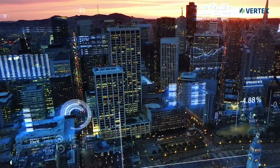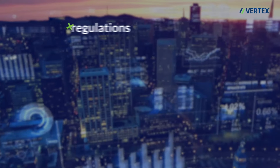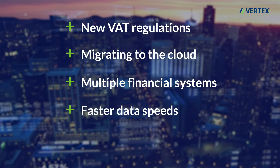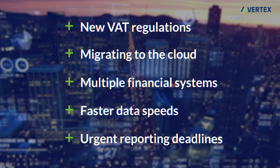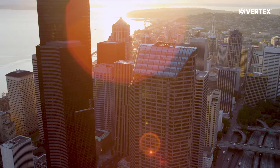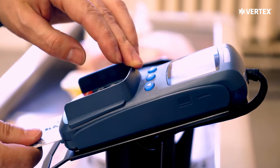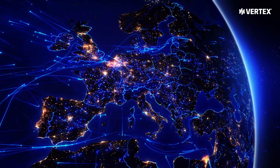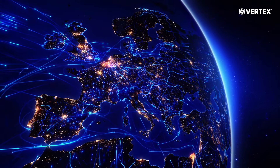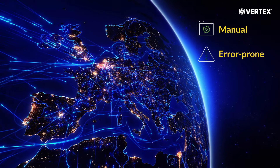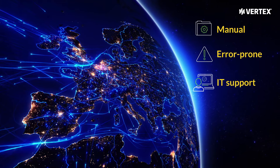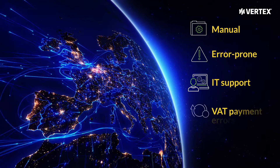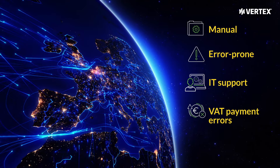Managing tax across Europe has become increasingly complex. New VAT regulations, migrating to the cloud, multiple financial systems, faster data speeds and urgent reporting deadlines. For companies with cross-border supply chains, ensuring consistent VAT treatment across all legs of a transaction requires tedious manipulation of data in the ERP system. The process is manual, error-prone and usually requires significant support from IT. Errors in the interpretation of which data is relevant for VAT determination can mean errors in VAT payments and accruals which affect the bottom line.